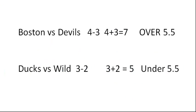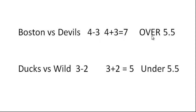If you're totally new to betting, here is a simple example for you to understand game totals. For example, Boston is playing against the New Jersey Devils and the score is 4-3. We need to add up both the team scores, so that's 4 plus 3, which equals 7, which means that was over 5.5 goals. So if you place a bet for over 5.5, then you would have won.